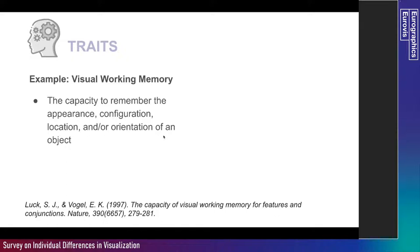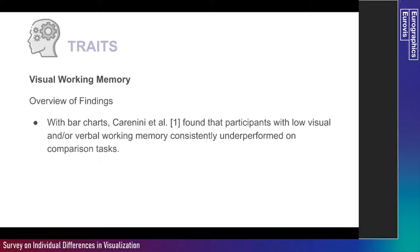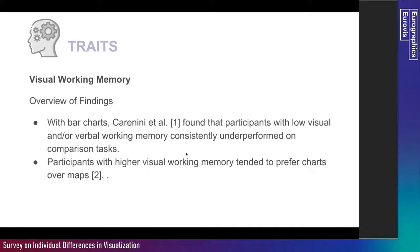A fourth example is visual working memory — a cognitive ability defined as the capacity to remember the appearance, configuration, location, or orientation of an object. With bar charts, participants with low visual or verbal working memory consistently underperformed on comparison tasks, similar to results seen with verbal working memory. Those with higher visual working memory tended to prefer charts over maps. Both forms of working memory are also useful for predicting participants' learning curves using bar charts.